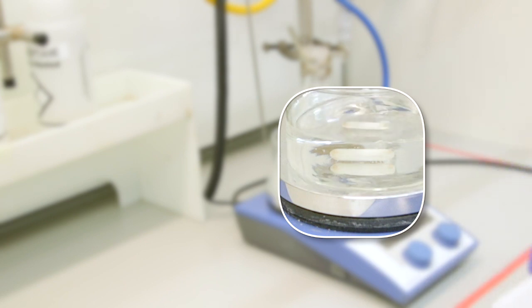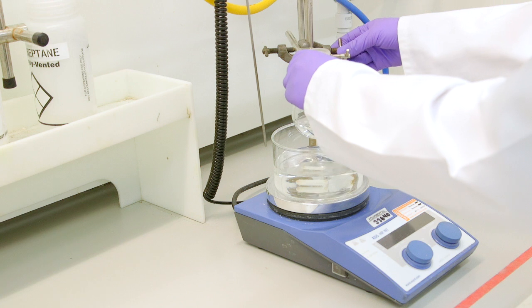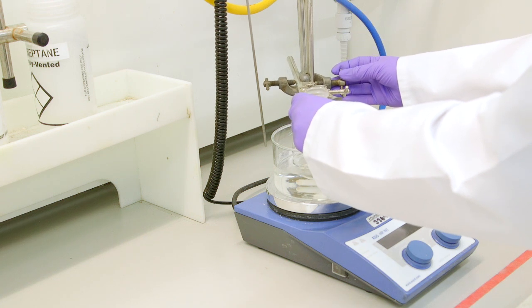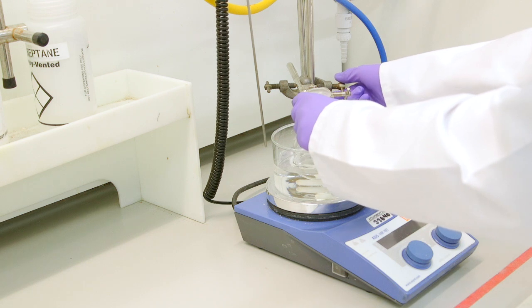We will place our oil bath underneath the flask and then we will carefully lower our flask into the bath. Take note we are not heating at this stage. We can now start stirring the mixture.